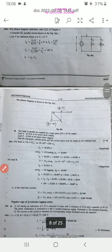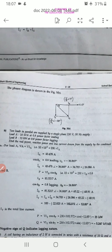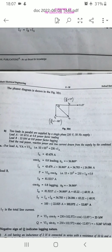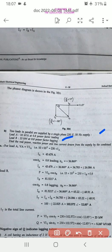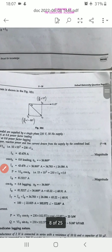Next, we have two loads in parallel are supplied by a single-phase 230V 50Hz supply. Load A is given at 10 KVA at 0.8 power factor leading. Load B is given at 15 kW at 0.8 power factor lagging. You have to find the real power, reactive power and line current drawn from the supply by the combined load.